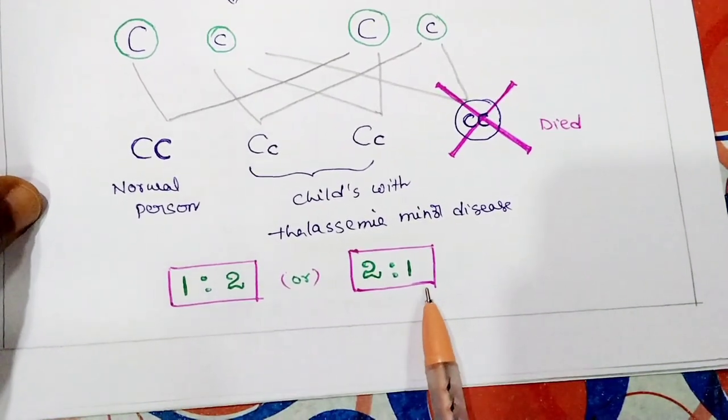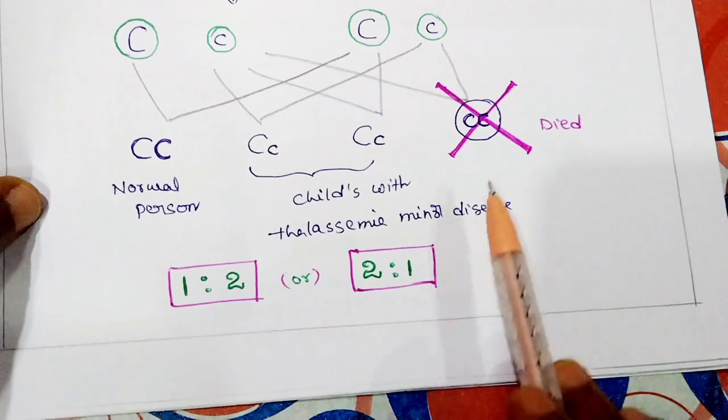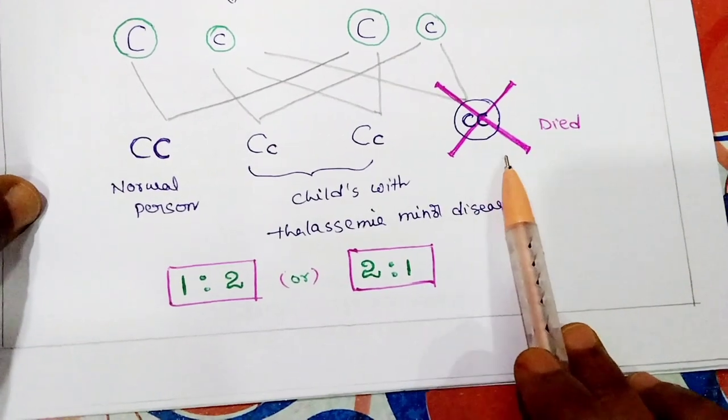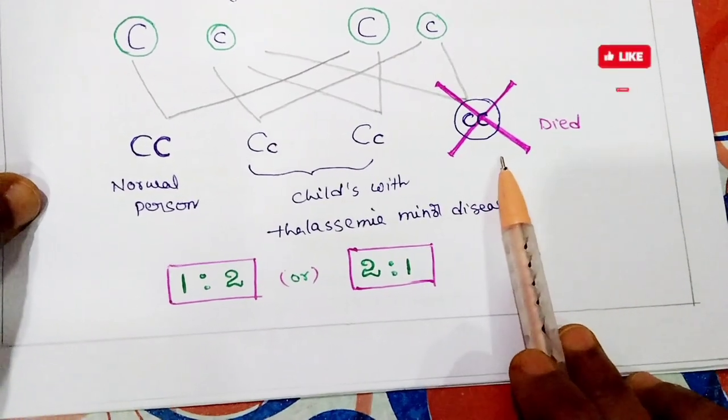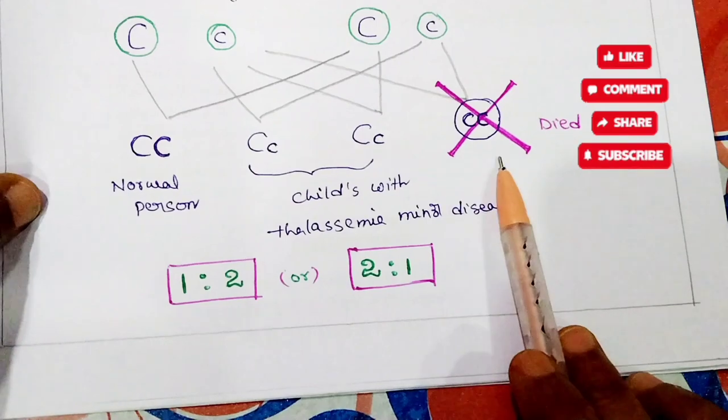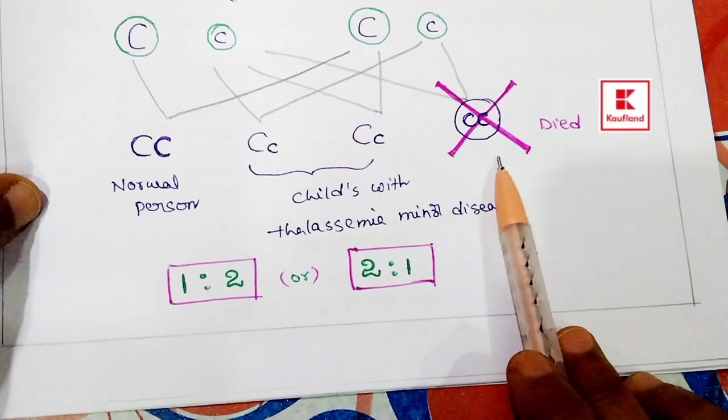So the ratio is 2:1. One individual will definitely die because the condition is always recessive lethal in homozygous state.